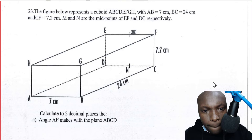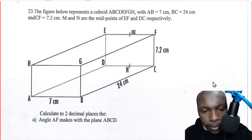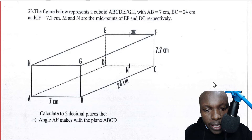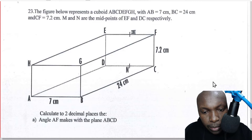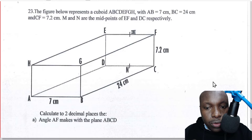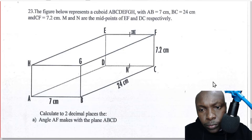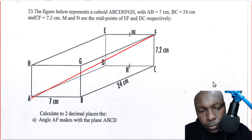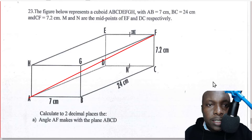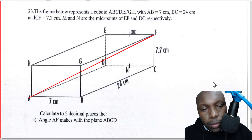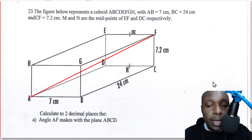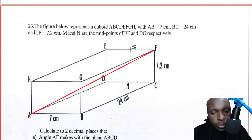Let us go to the first part, looking at the measurements given and points N and M. We want to calculate to two decimal places the angle AF makes with the plane ABCD. The first thing we're going to do is draw line AF, and we want to get the angle that line AF makes with the plane ABCD. How do you get the angle between a line and a plane?